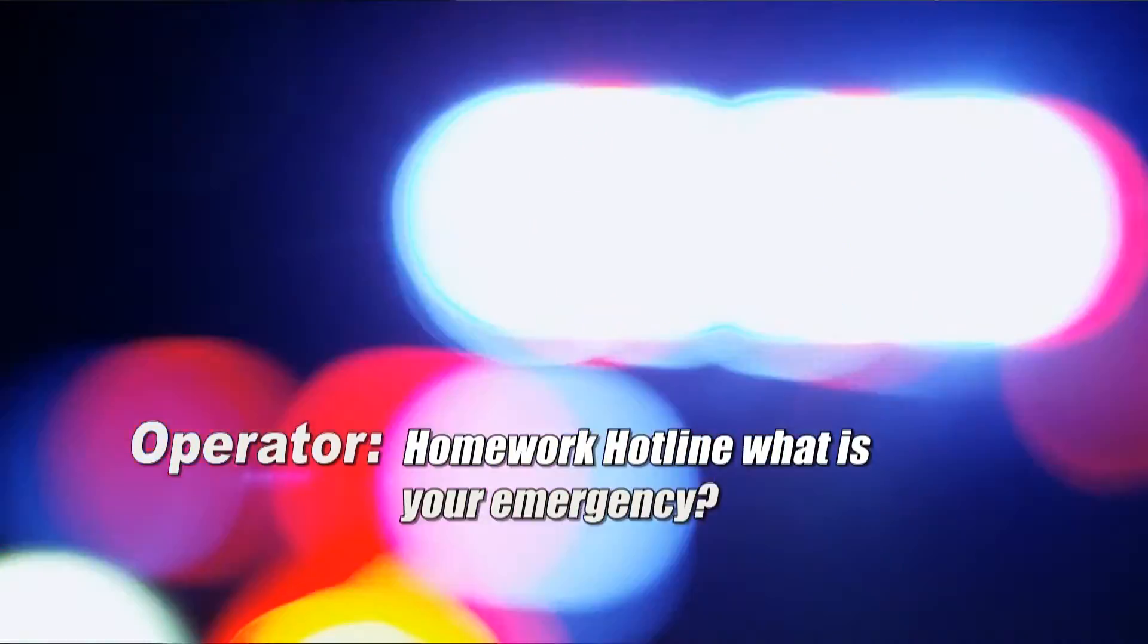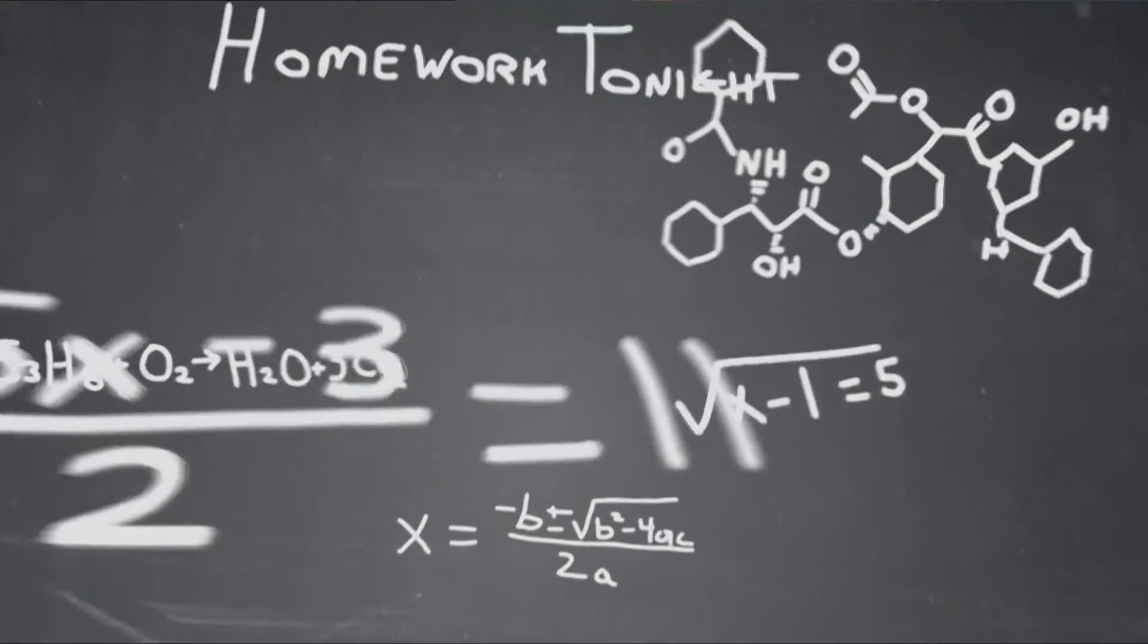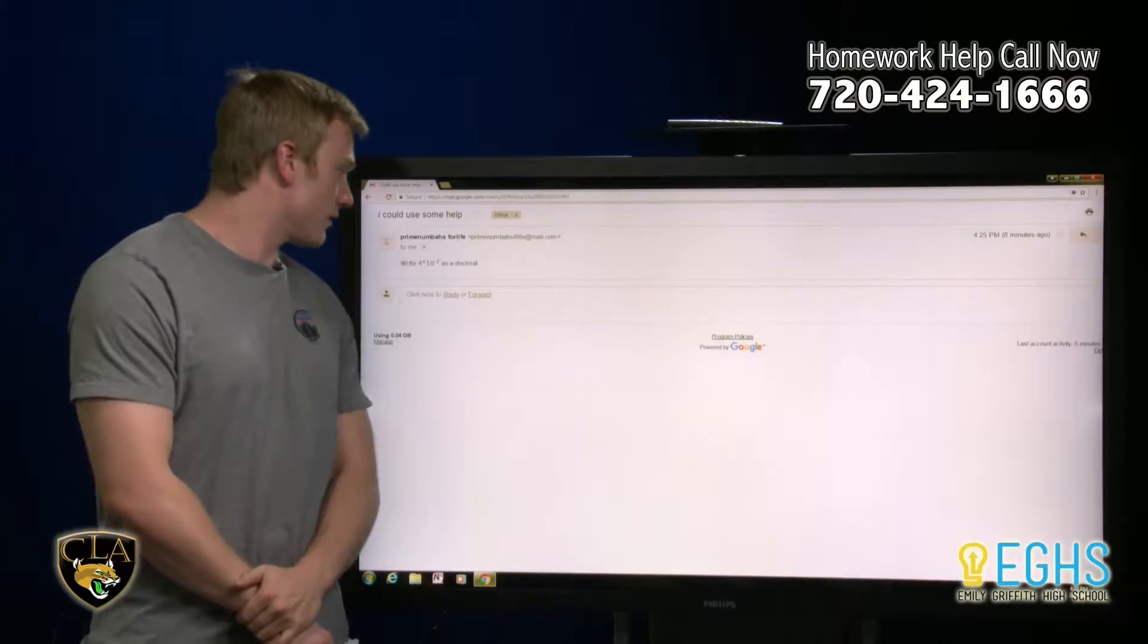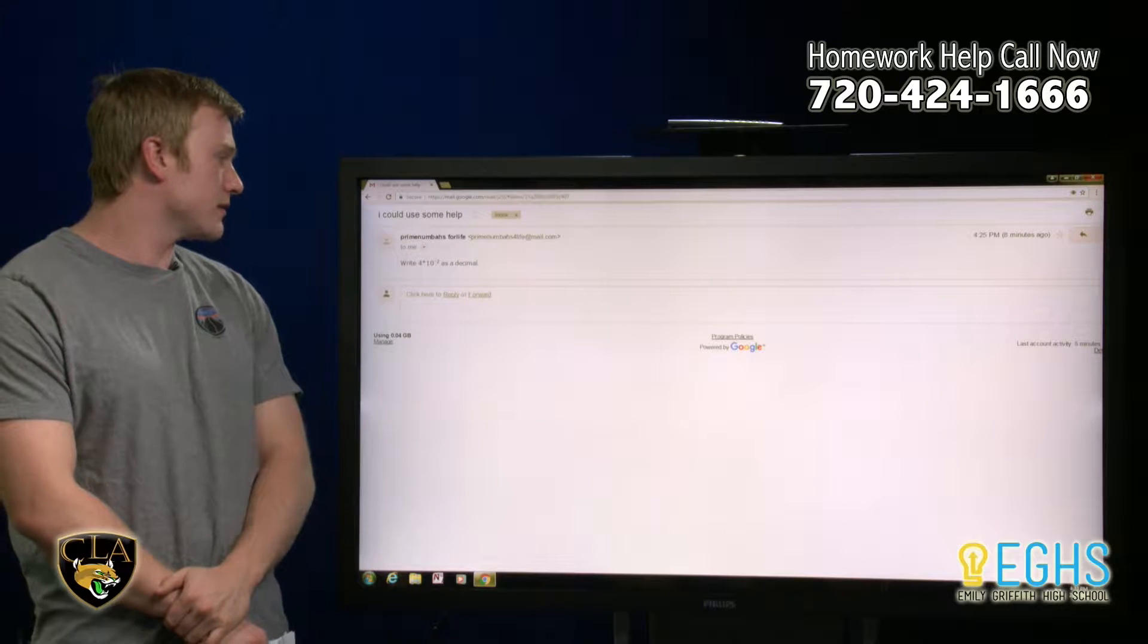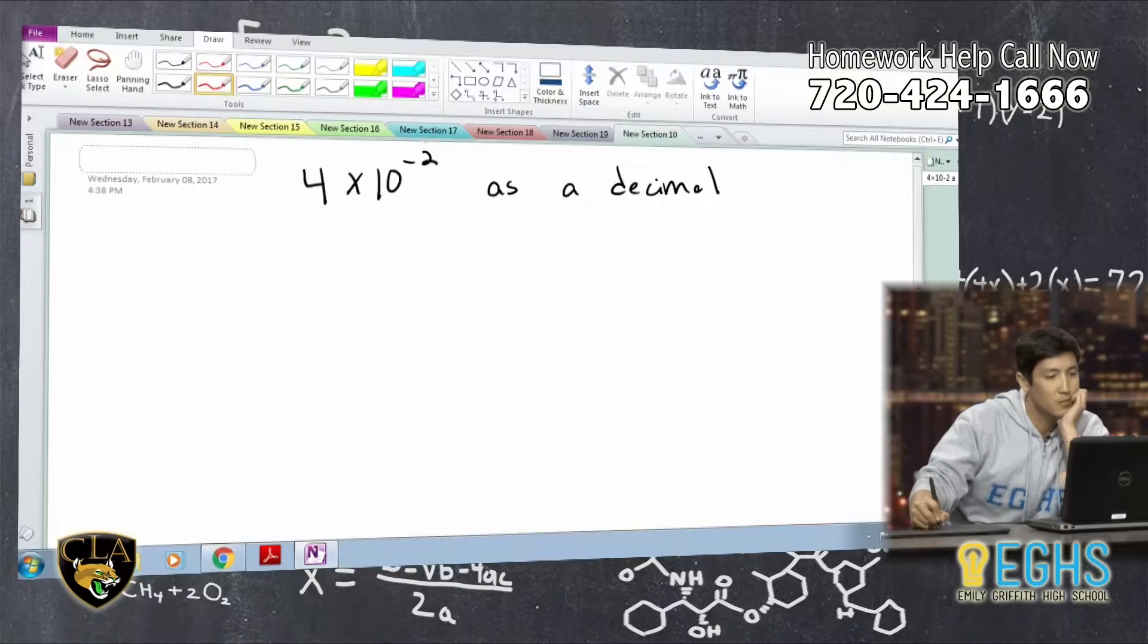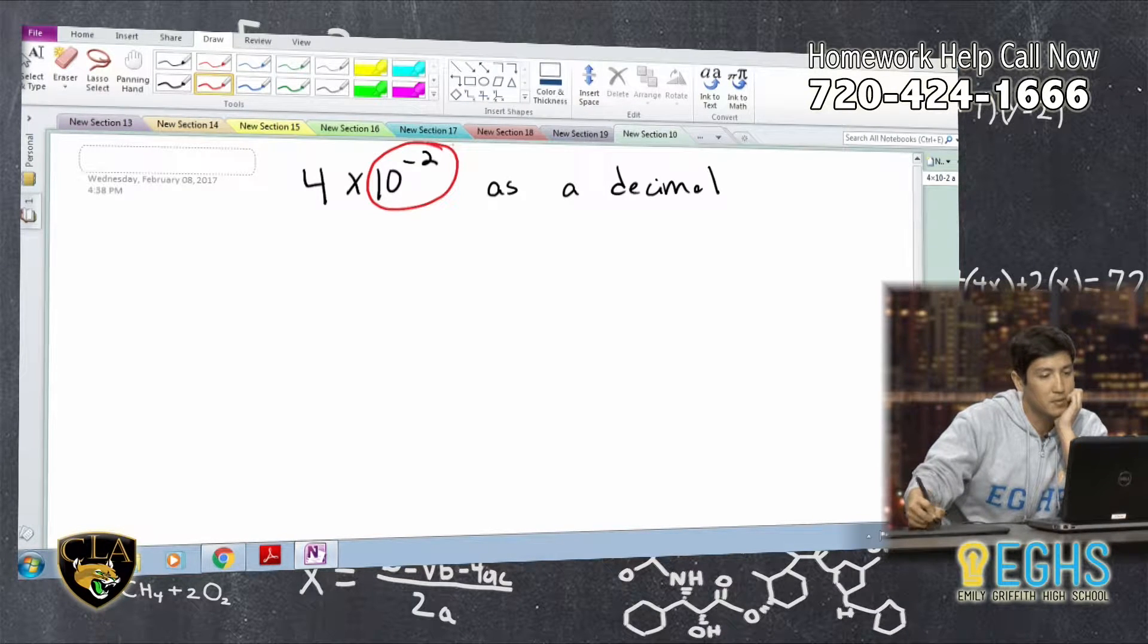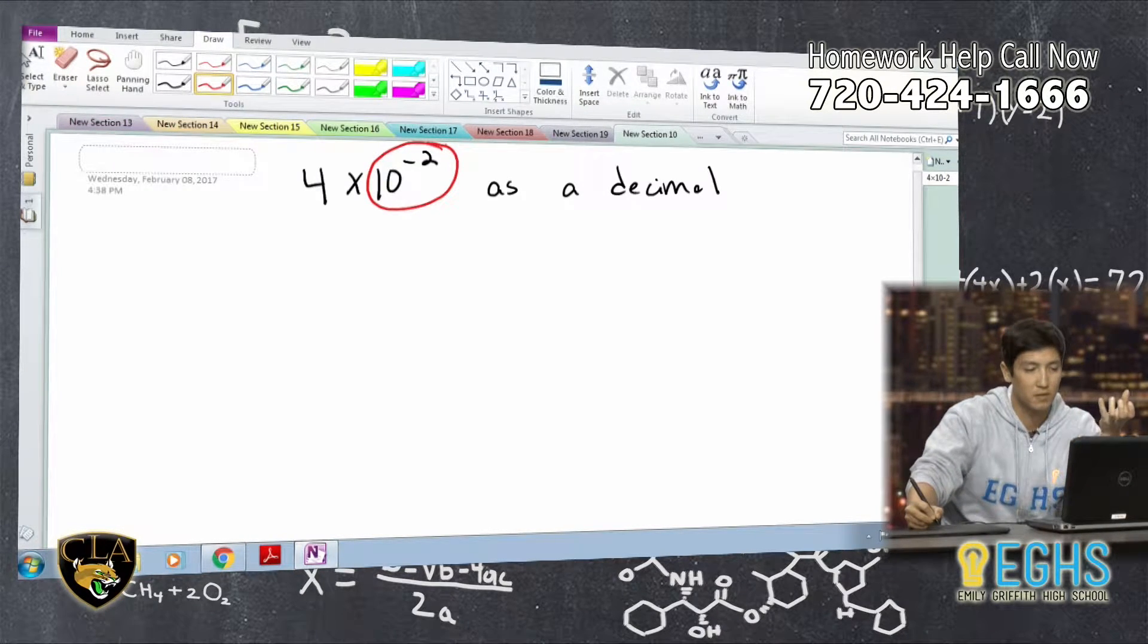Onward hotline, what is your emergency? Write 4 times 10 to the power of negative 2 as a decimal. When I raise any number to a negative power, it's kind of like we're flipping it.